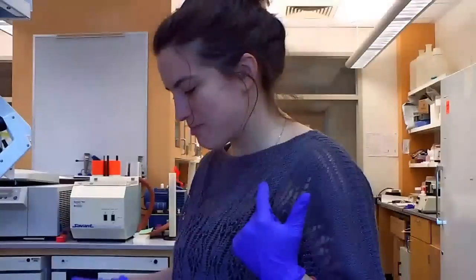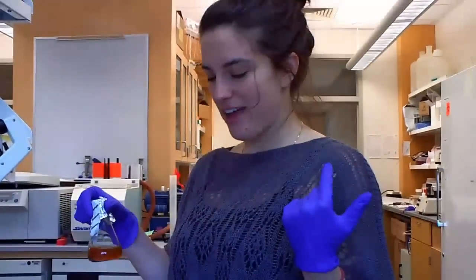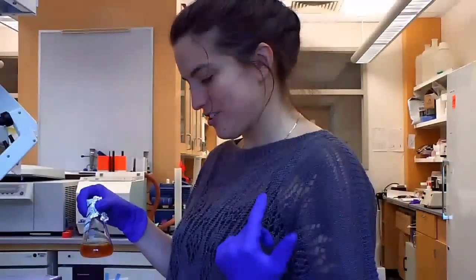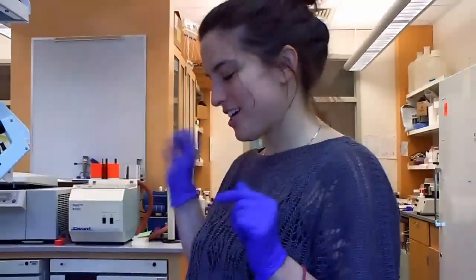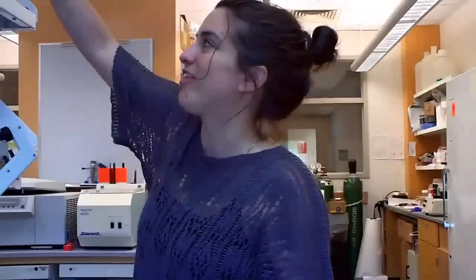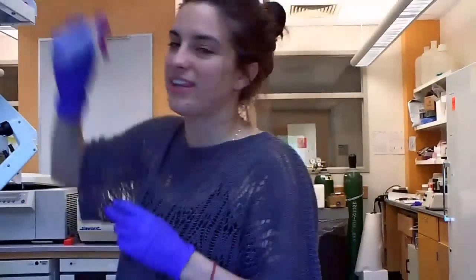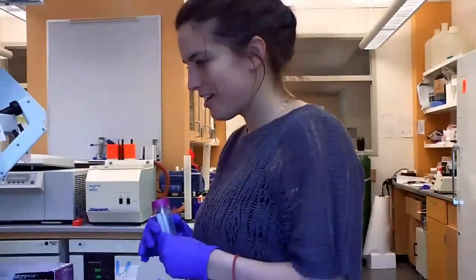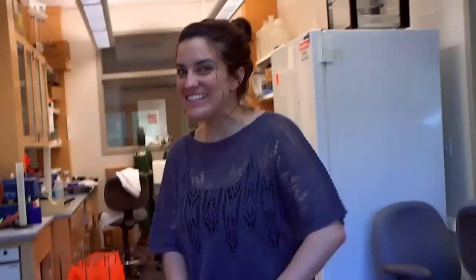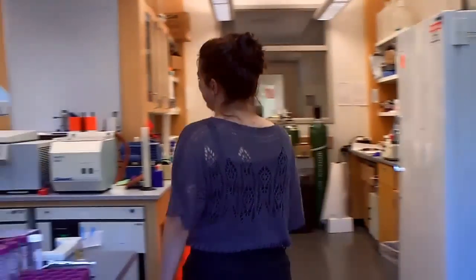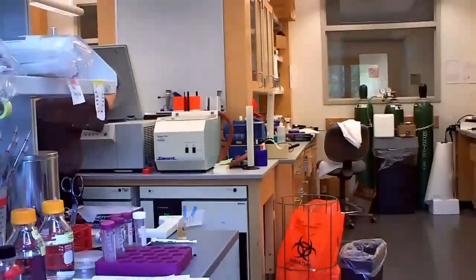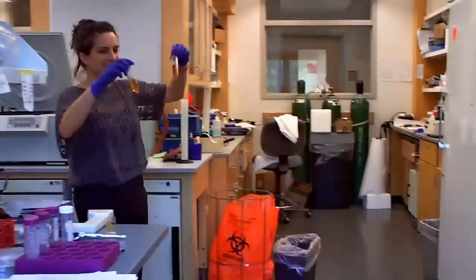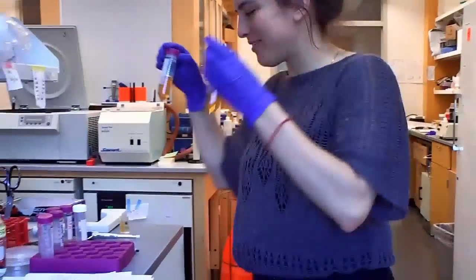So now I need to spin the cells down at 3000 G for 5 minutes and then wash with 25 ml of water and then resuspend with 1 ml of water. So for that, I'll separate the two into two different conical tubes. Five minutes is done!